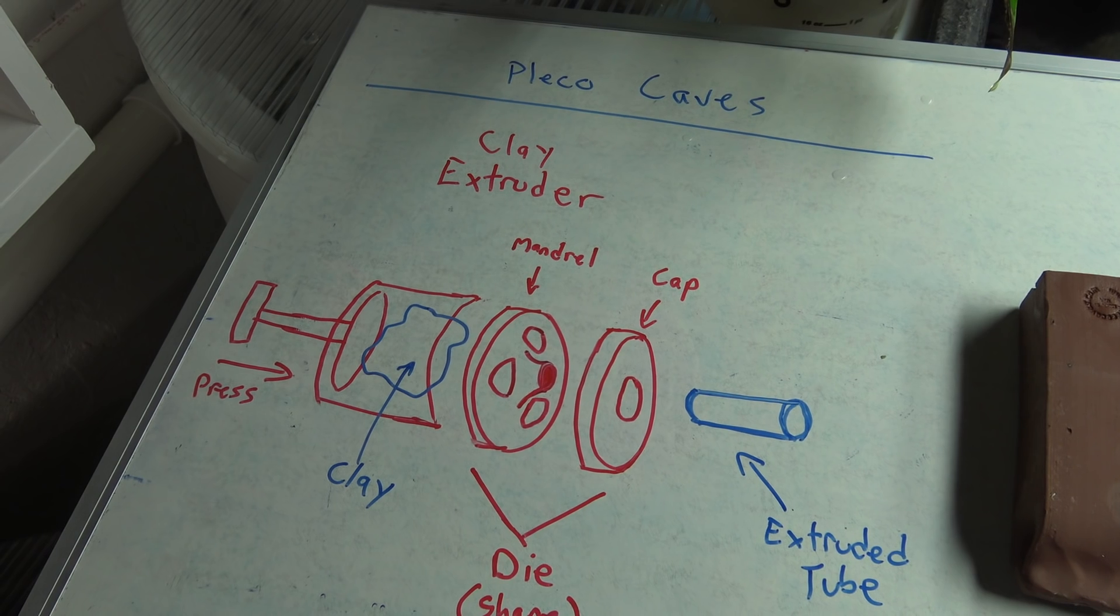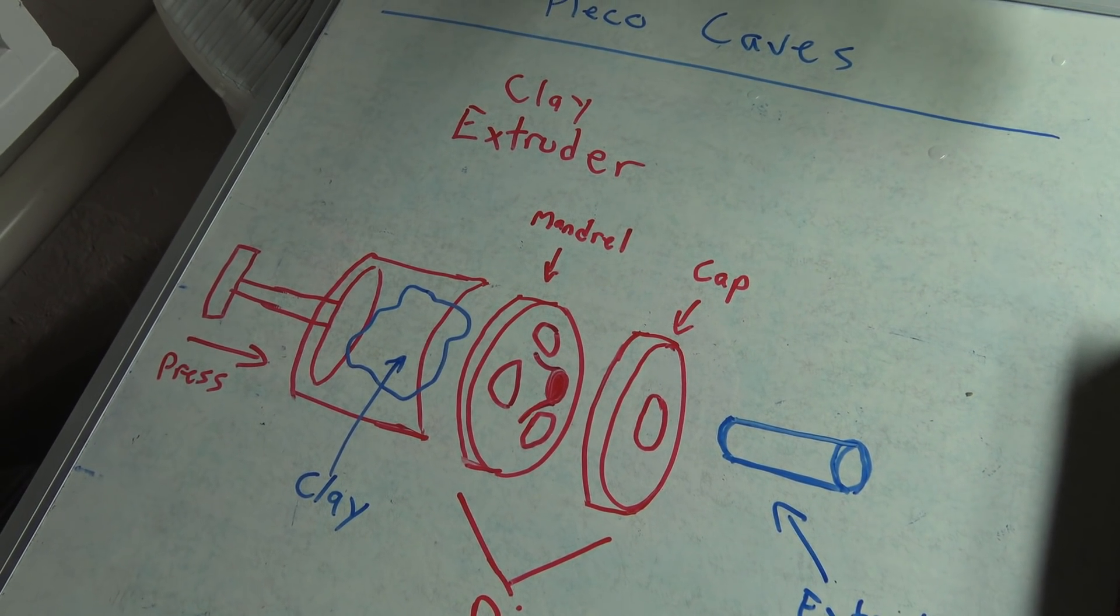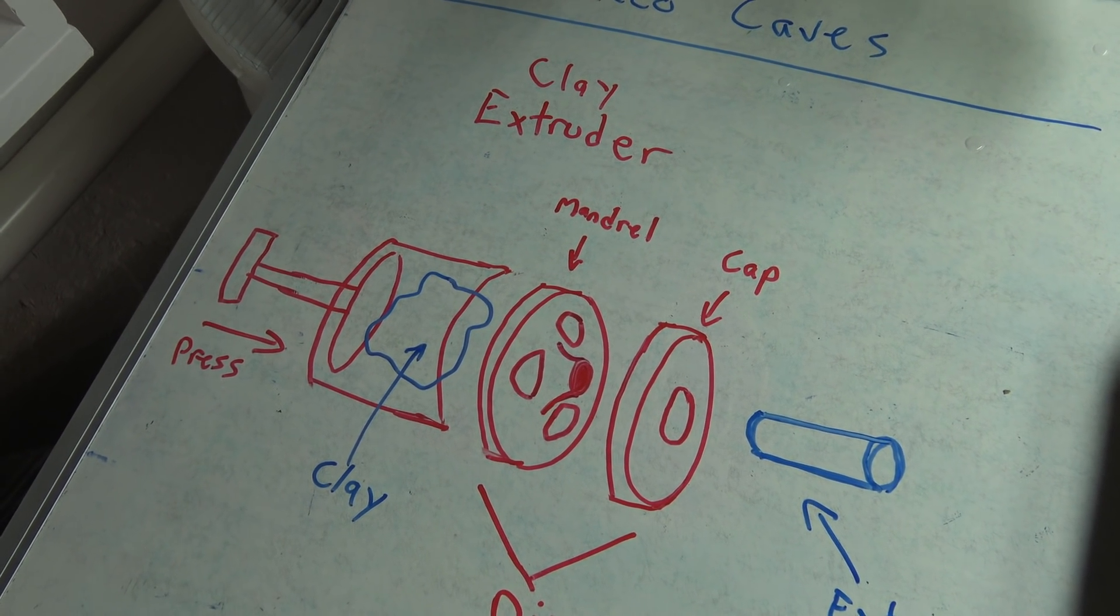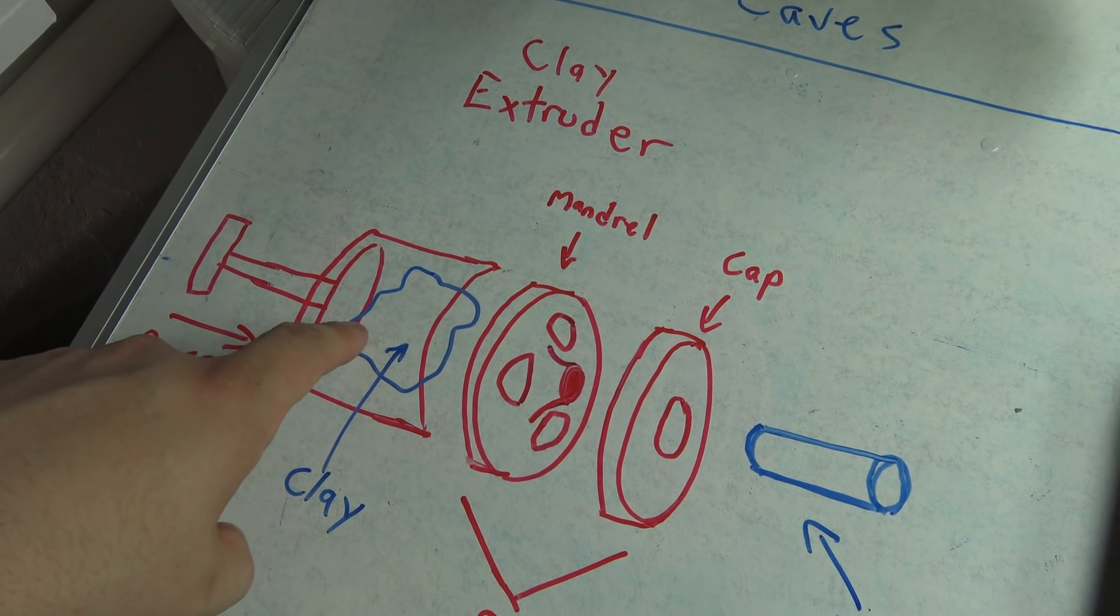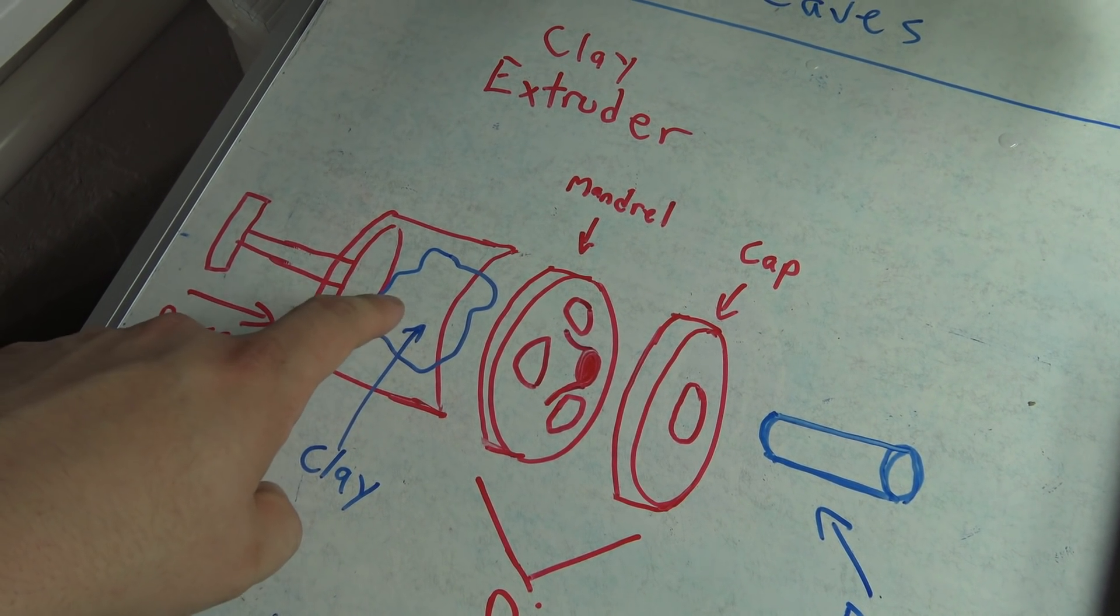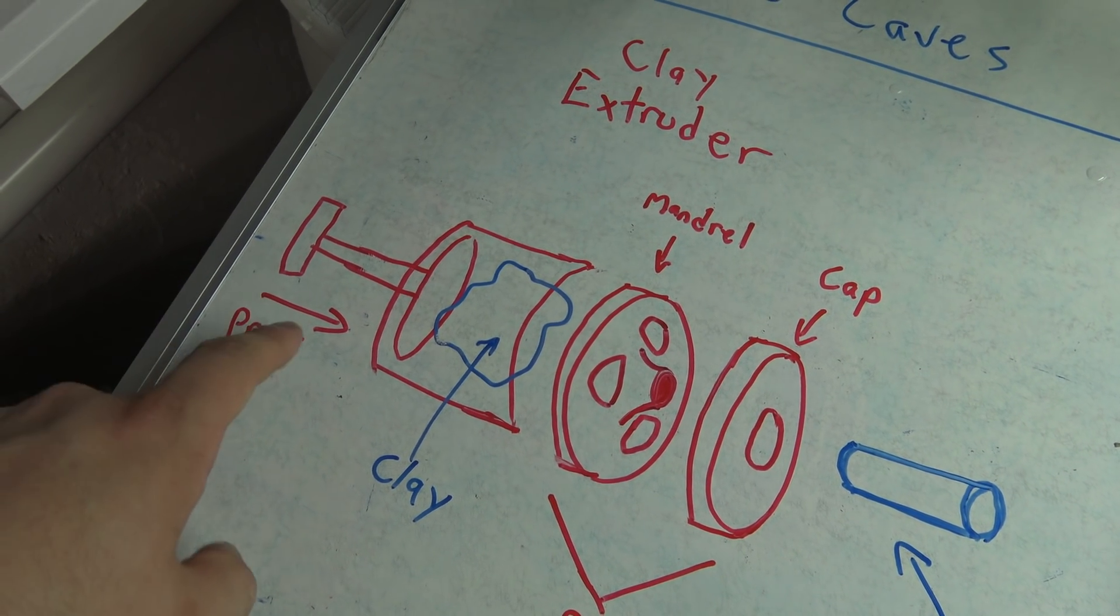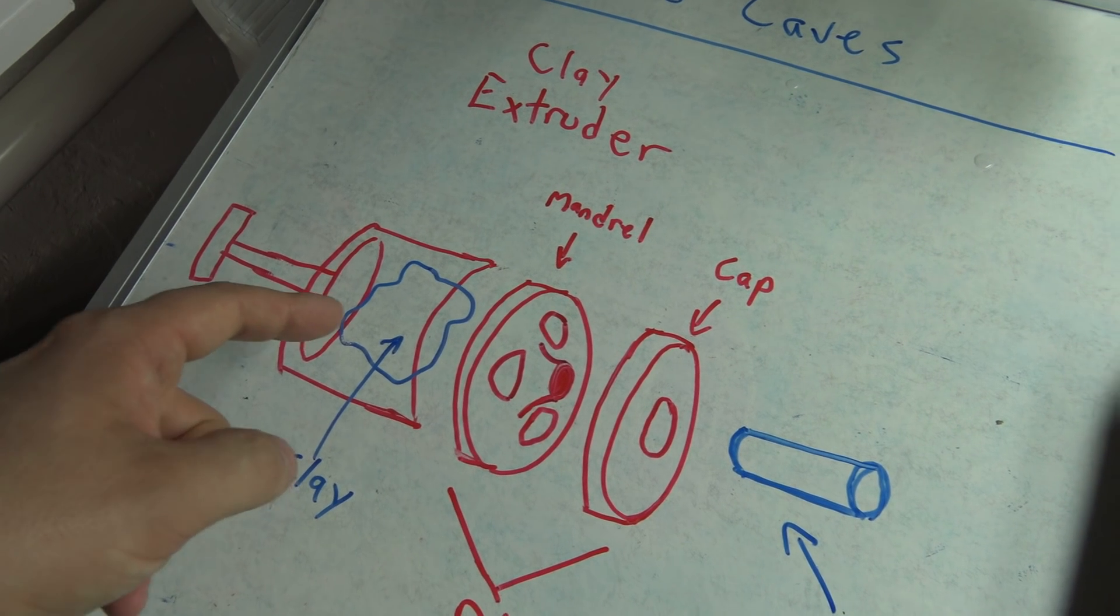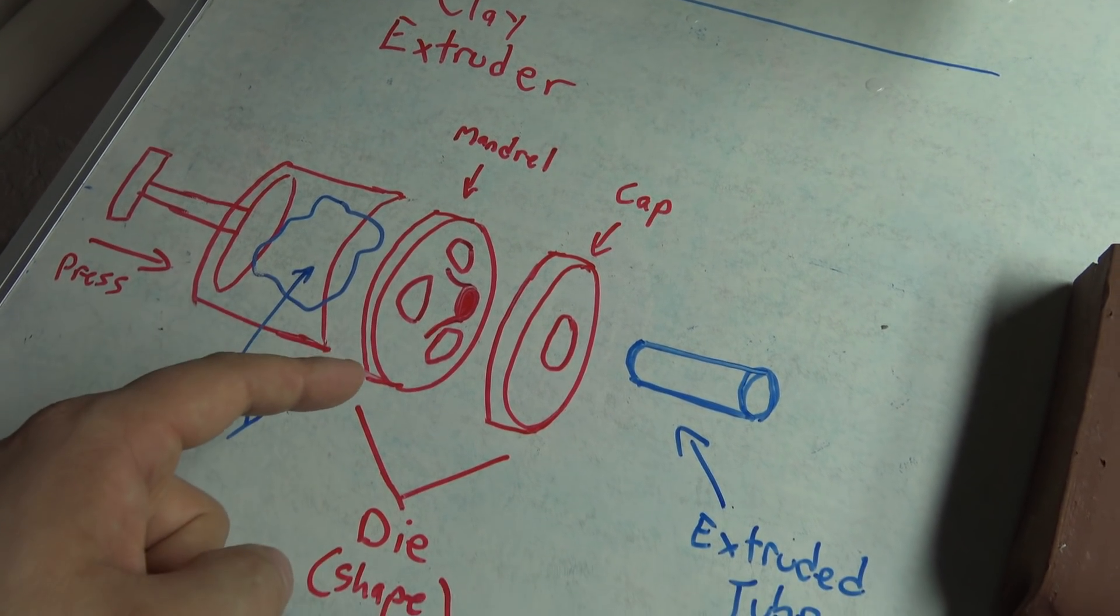It's basically just a clay extruder. If you've played with Play-Doh as a kid, you've used an extruder before. Essentially, what it is, is a very simple machine where you have a chamber full of your material. In this instance, it's clay. And there's a press. So you're able to press and compress that clay through what's called a die.